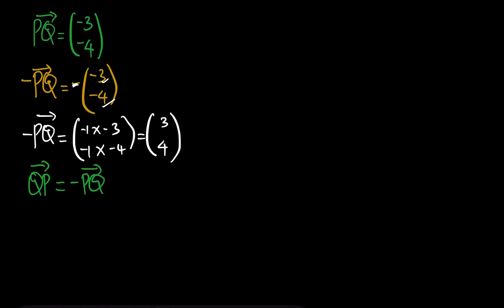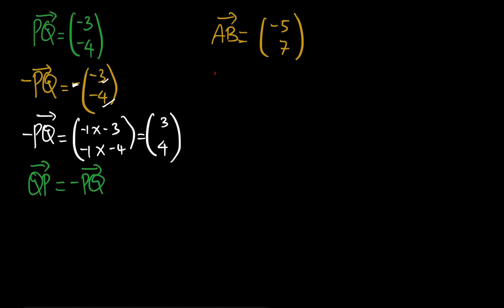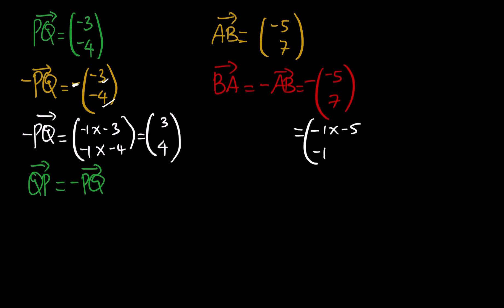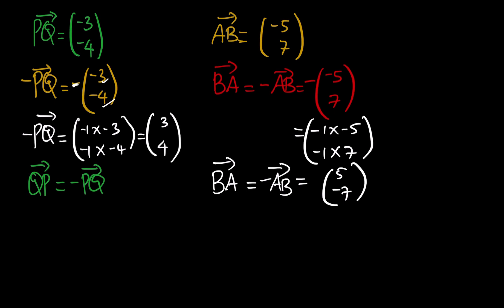For example, if we are given a vector AB with components negative 5 and 7, and we are asked to find vector BA, we simply find the negative vector of AB. We take negative 1 times negative 5 and negative 1 times 7, ending up with 5 and negative 7 as our BA vector.